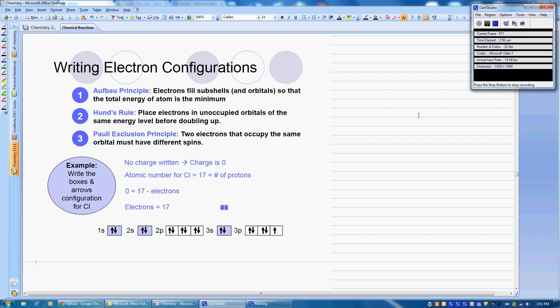Okay, last video we left off with writing the electron configuration for chlorine, and so we've been doing the box and arrow notations. Here you can see it's 1s2, 2s2, 2p6, 3s2, 3p5, and those added up to our 17 electrons.